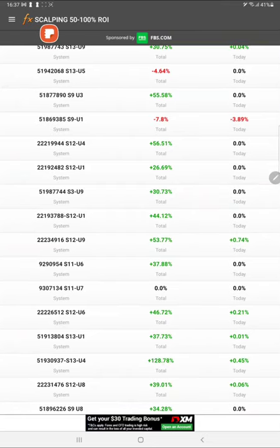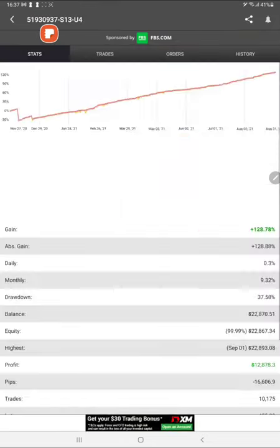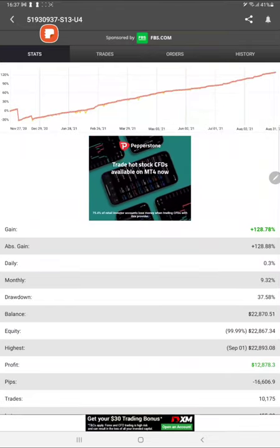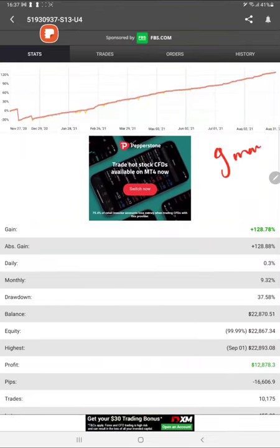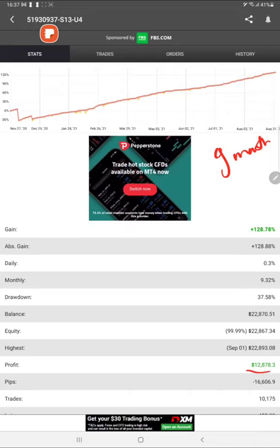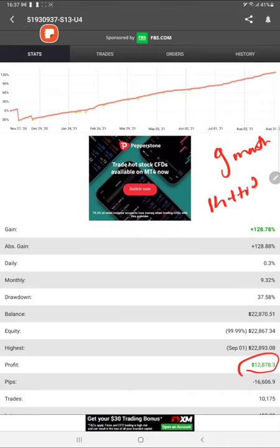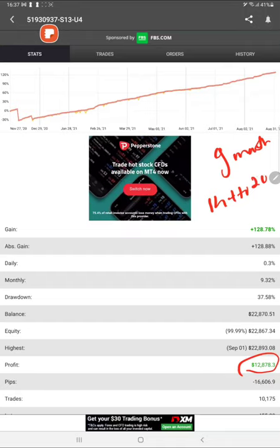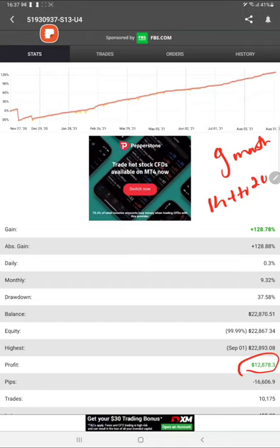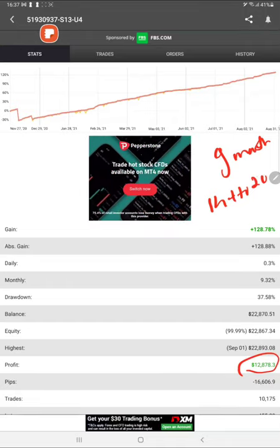This is the first time we are publishing account 51930937. This strategy is performing since nine months and it has given a very good amount of profit. You can say 14 to 20 percent return per month it's generating, around $1,400 to $2,000 profit with $10,000 base capital. It's less drawdown and whatever drawdown has taken from profit only.